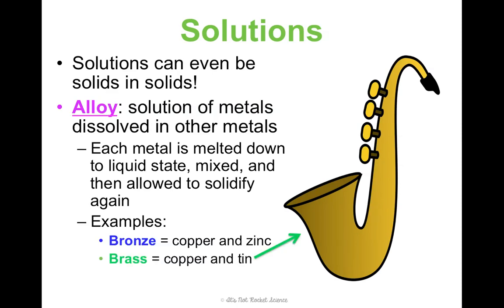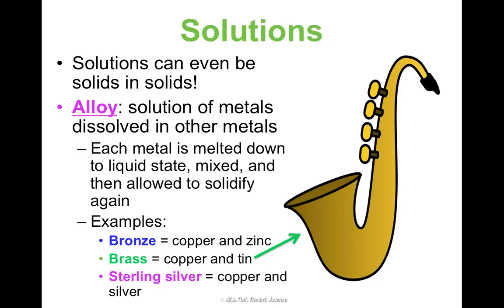Brass, like this instrument, is a solution of copper and tin. Sterling silver is a solution of copper and silver. If you've ever had jewelry for a really long time and it starts to turn that copper color, that's because the silver on the outside has basically been wearing off over time. It starts to turn your finger green, so you know it's sterling silver, not pure silver.